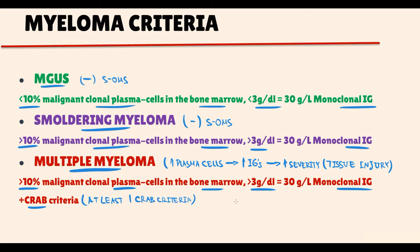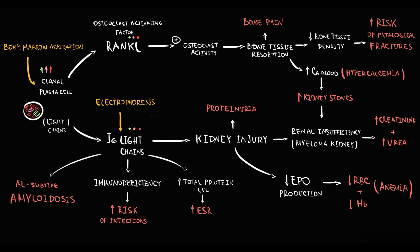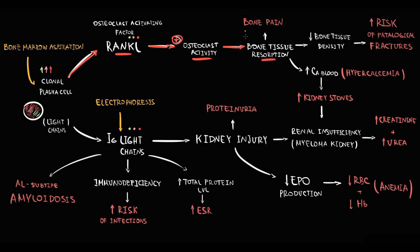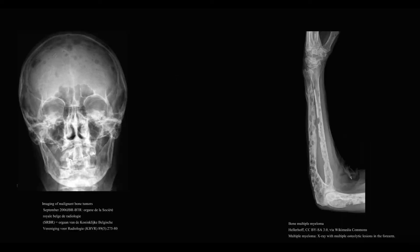In CRAB criteria, B stands for bone disease. In multiple myeloma, clonal plasma cells massively produce RANKL, which stimulates osteoclast activity, and osteoclasts begin to resorb bone tissue. The severity of bone tissue damage can be assessed by X-ray. The resorption of bone tissue presents on X-ray as punch-out lesions — here, for example, we can see a punch-out lesion on a skull.